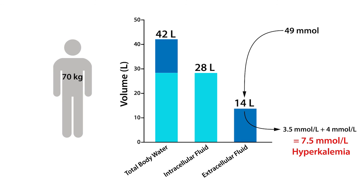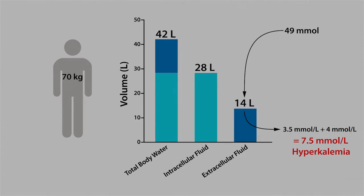Under normal physiological conditions, the consumption of 49 millimoles of potassium would not increase the serum potassium to 7.5 millimole per liter. Rather, the body has a mechanism to avoid this potential problem.